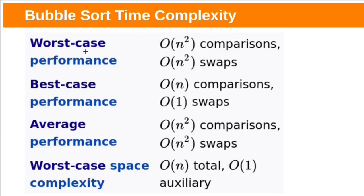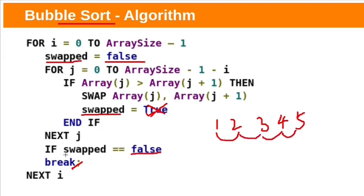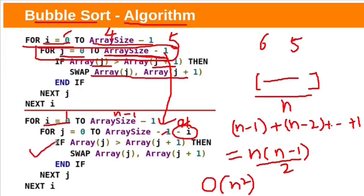We have already seen the worst case and average case time complexity — it is O(n²). If we use the optimized bubble sort algorithm, in the best case — meaning all elements are already in sorted order — it takes only N comparisons. No swappings are performed, so swapped remains false and the algorithm exits. The best case time complexity of the optimized bubble sort is O(N). Without the optimization, even if all elements are already sorted, the time complexity is still O(n²).